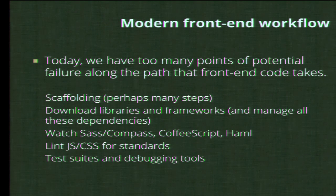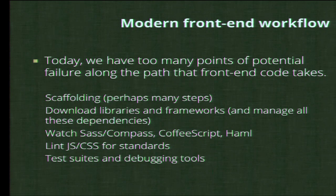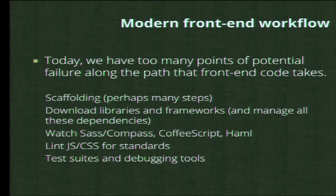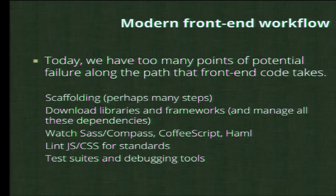Today we have a lot more tasks. Scaffolding can be very complicated because your application architecture might be very complex. Things like downloading libraries and frameworks — how do you keep all your dependencies up to date, keep your jQuery version current? Things like Sass and Compass — how do you manage all your CSS files and turn your partials into a comprehensive CSS file? Coding standards are very important on a large team. And finally, test suites and debugging tools — all of these can be integrated into your front-end ops workflow.